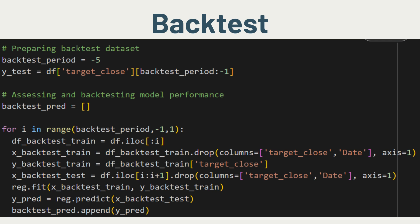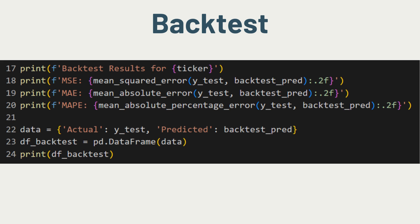To do that, I will create a loop within a predefined back-test time period range such that the model will constantly be updated with new information and be able to make better updated predictions. I have selected a back-test time period of one month or four weeks, and I will store the predicted values in a list and compare against the actual values to evaluate performance. Since this is a regression model, I have decided to use three metrics: mean squared error, mean absolute error, and mean absolute percentage error.